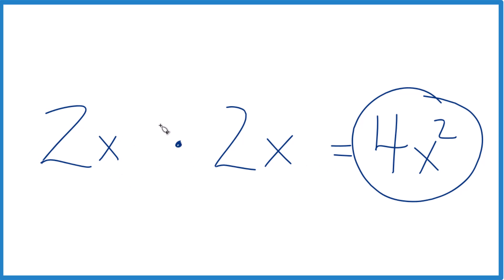Because here we're multiplying. So 2 times 2 is 4, x times x is x squared. That's it.